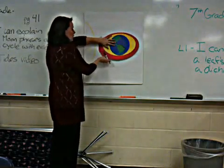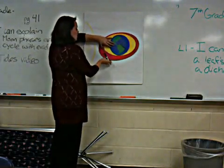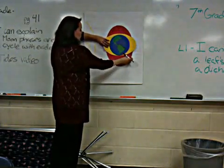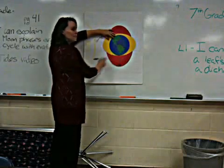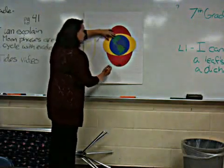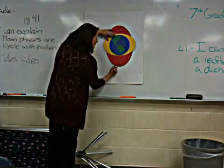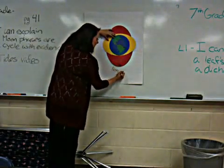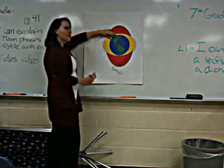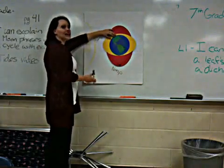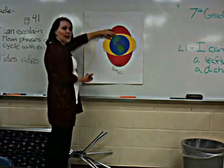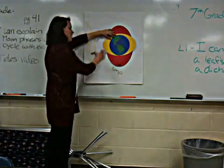If we follow around, when they're perpendicular like this, we call it a neap tide. Here, the high tide isn't as high, and the low tide isn't as low.